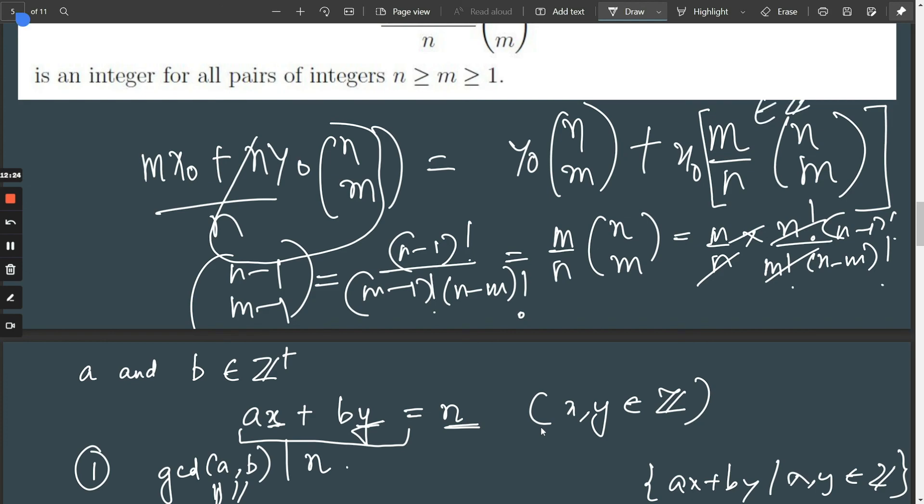We've shown that this is an integer. So we have an integer times an integer plus an integer. So clearly this is an integer. And we're done.